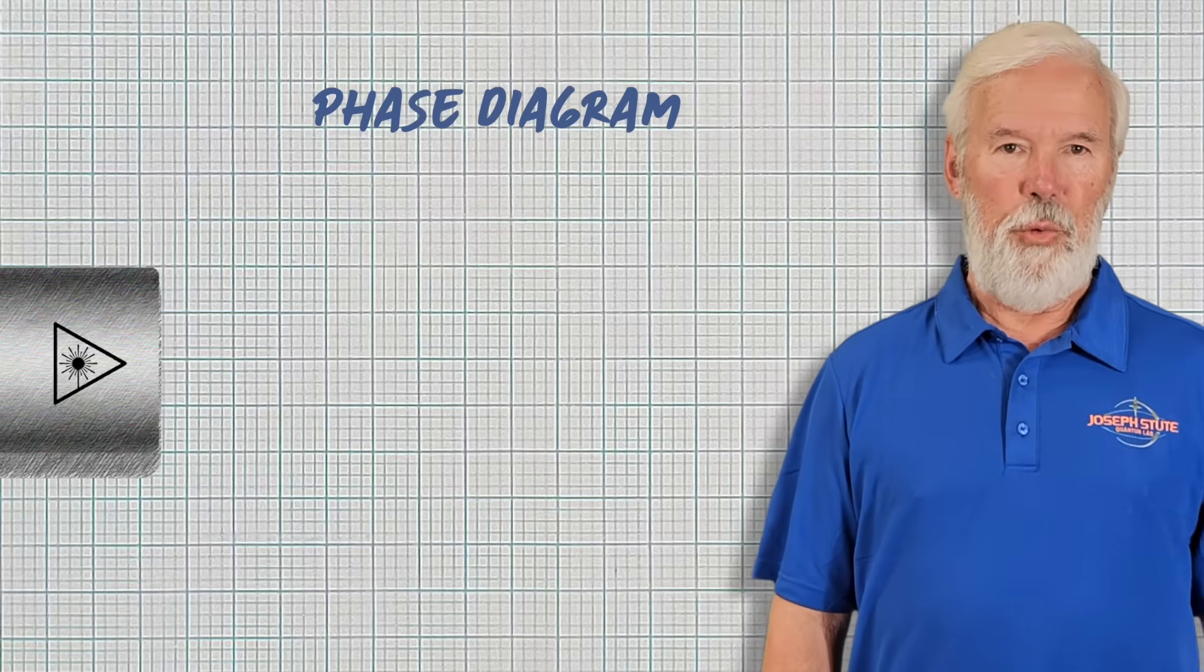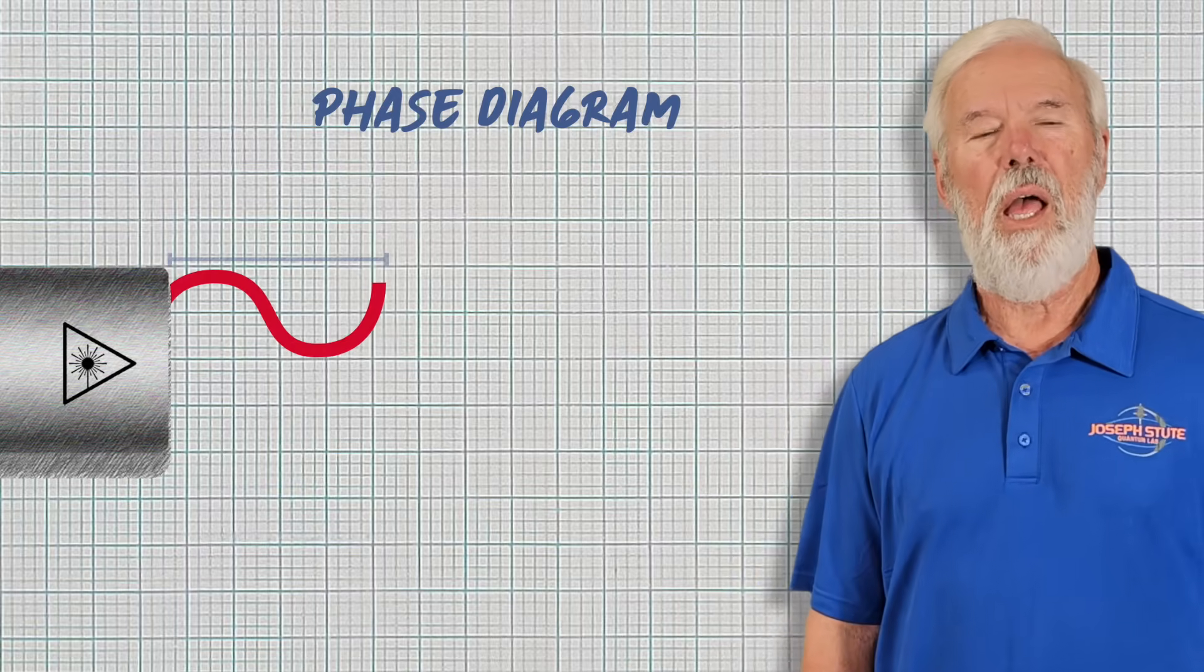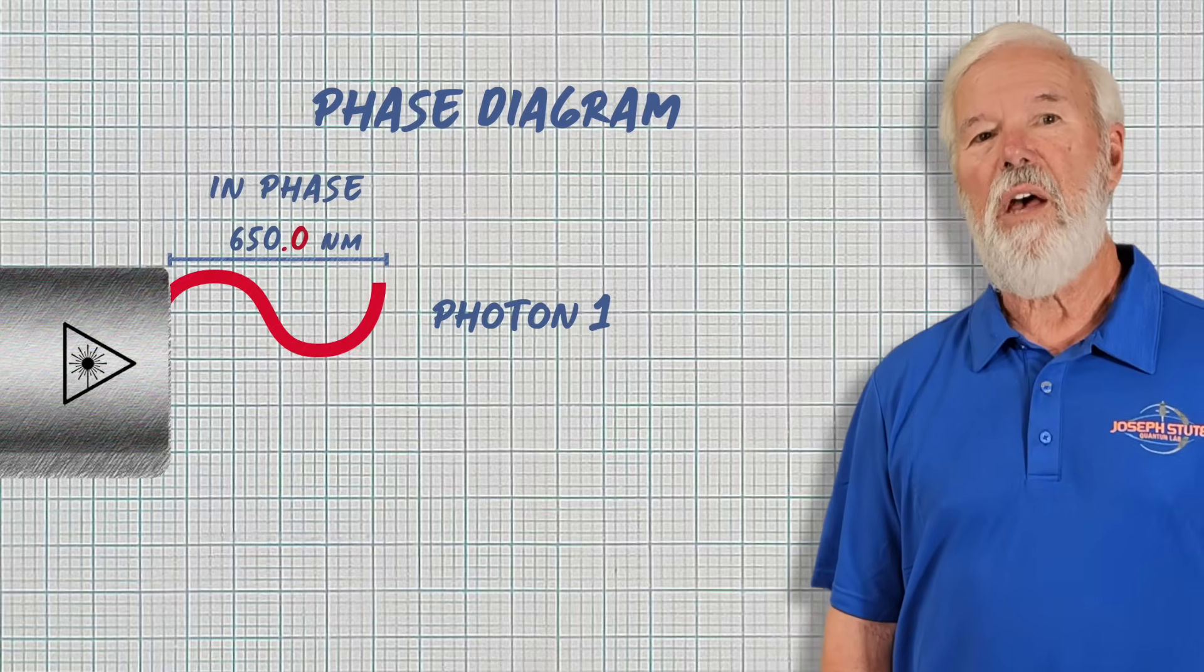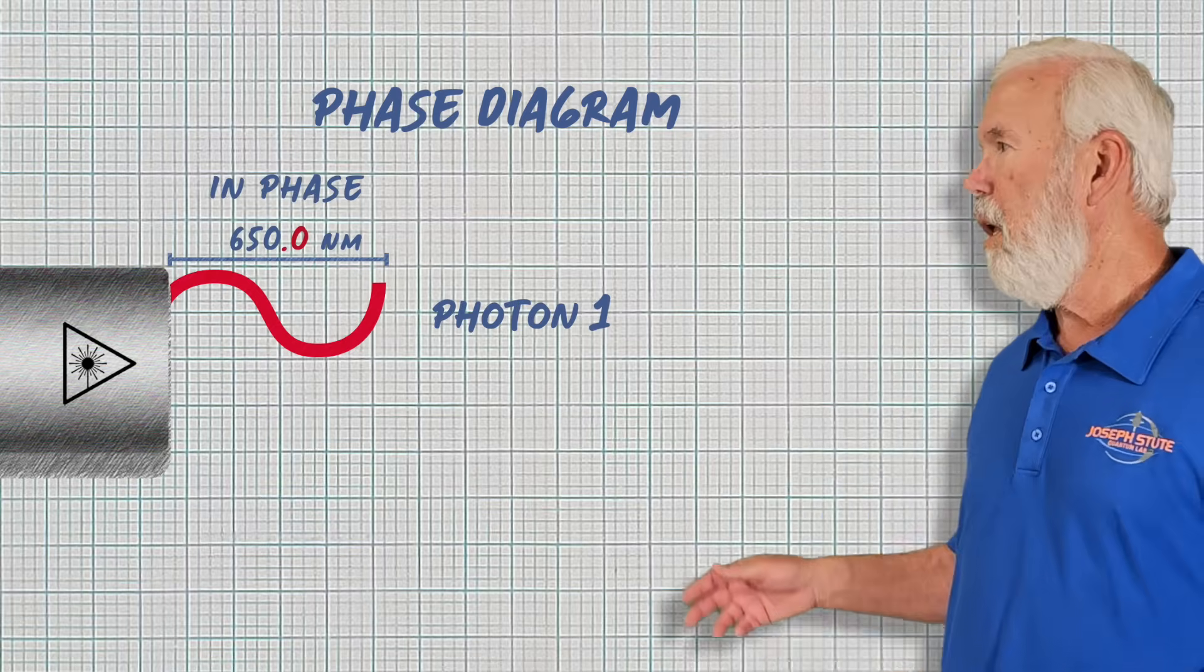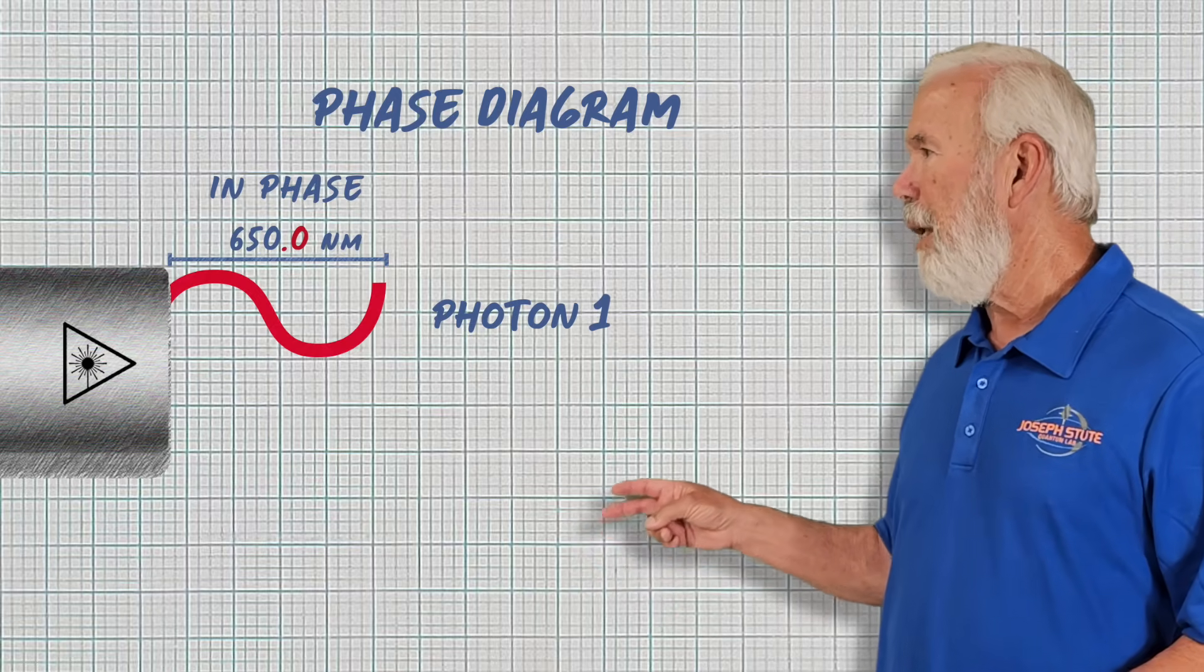The frequency range of laser light is commonly ignored. I'd like for you to consider how different frequencies affect the phase relationship between photons. Imagine two photons leaving a laser at the same time.